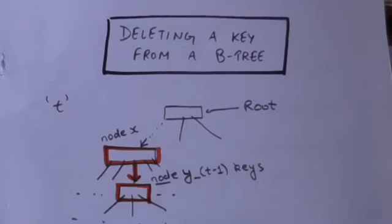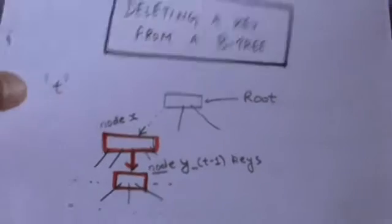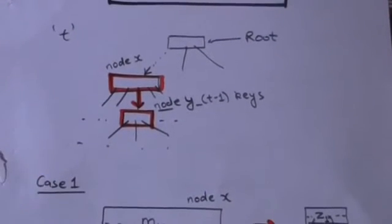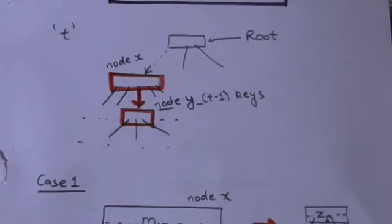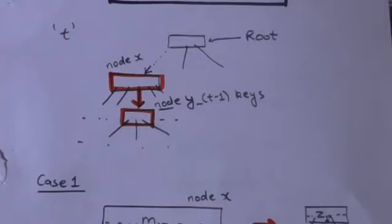Hello friends, welcome back. In this tutorial we will learn how we can delete a key from a B-tree. To delete a key from a B-tree, we will start from the root node and move down, searching for a node containing the key to be deleted. We will move to a node only if it contains at least T keys, where T is the minimum degree of the B-tree.